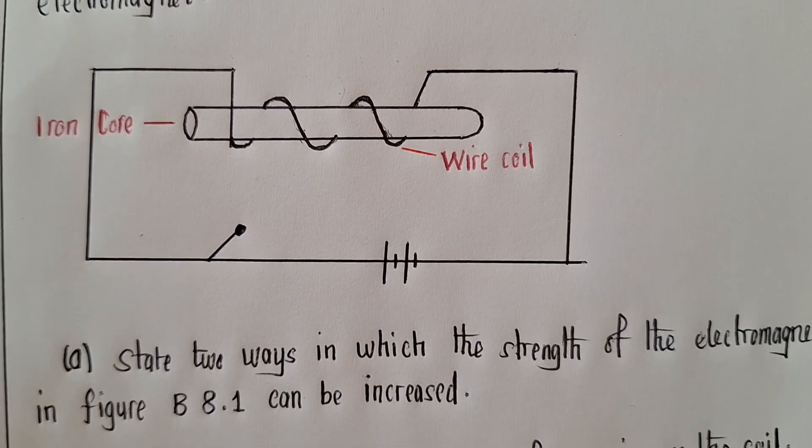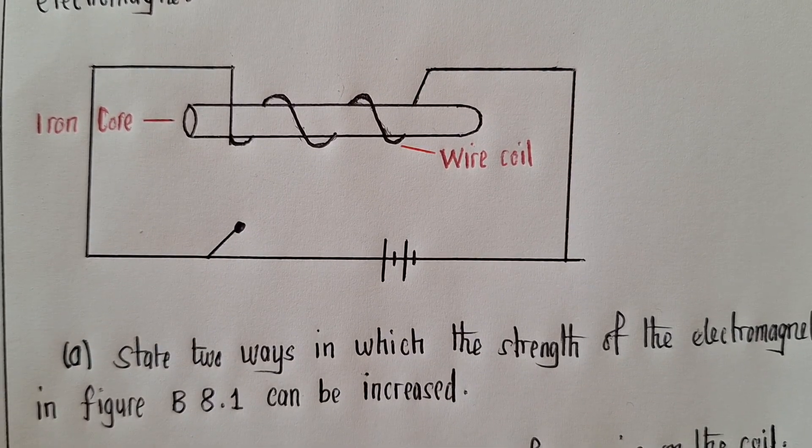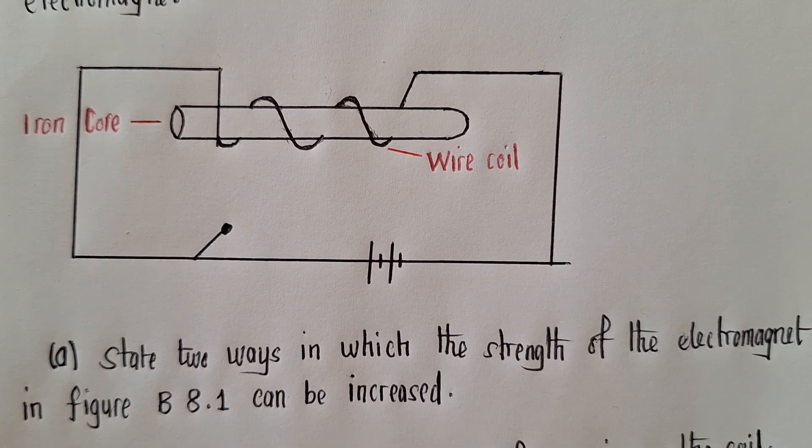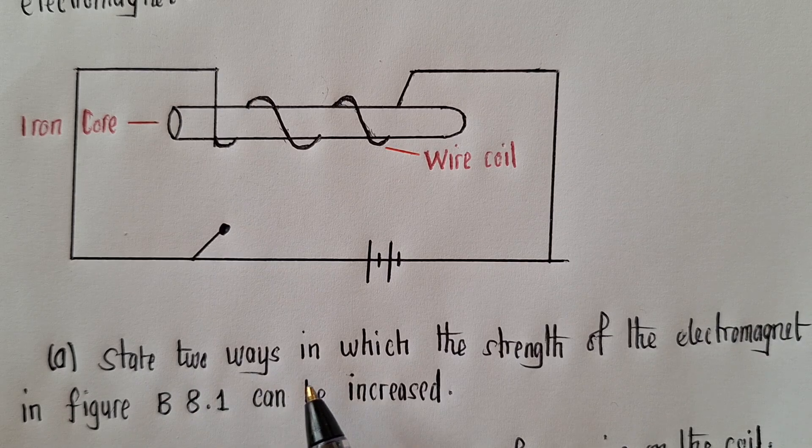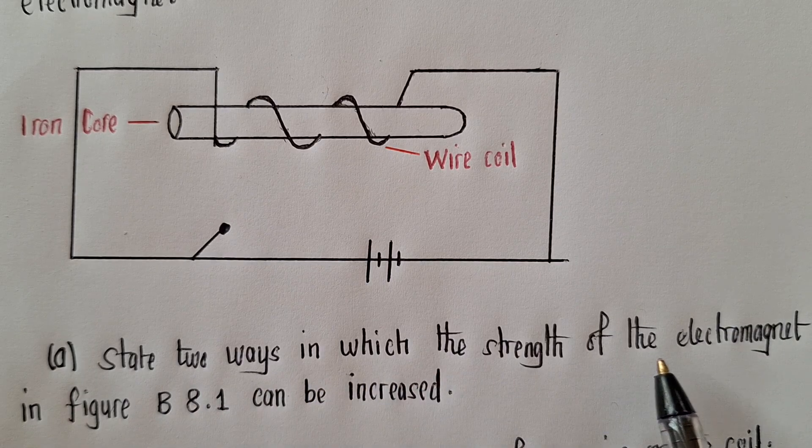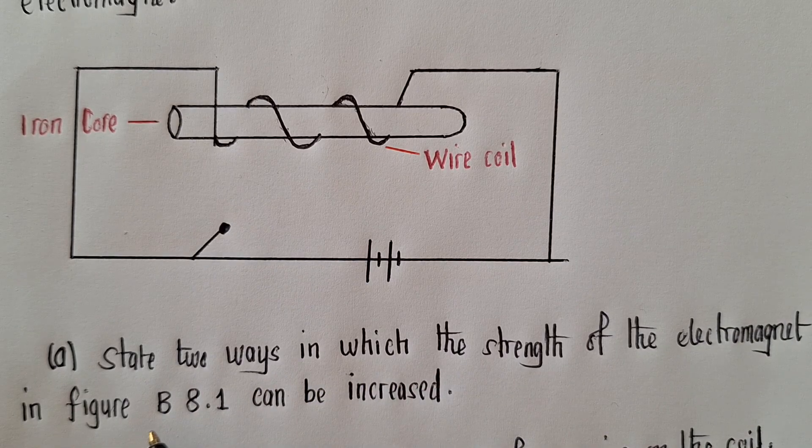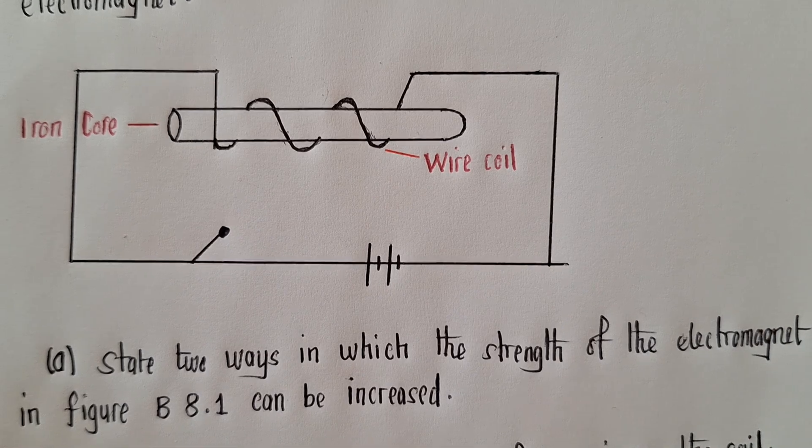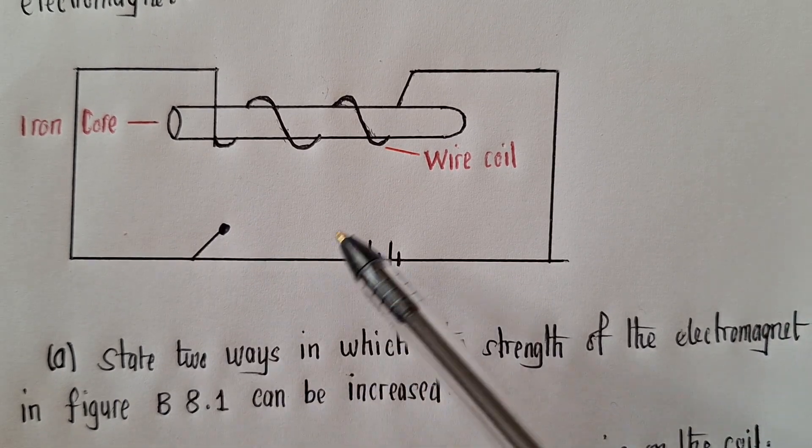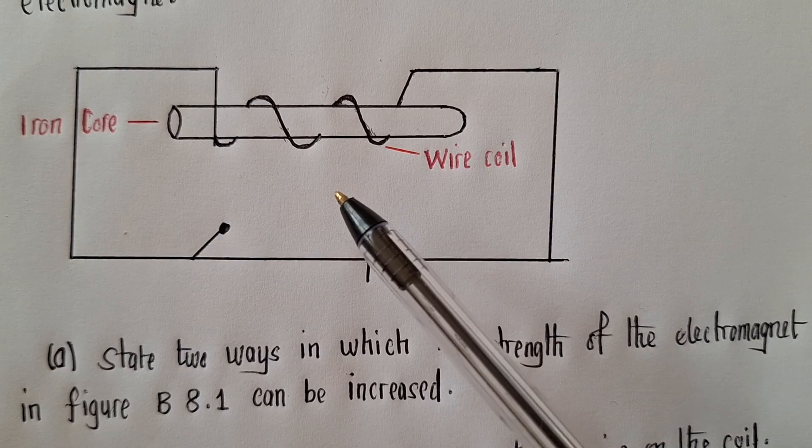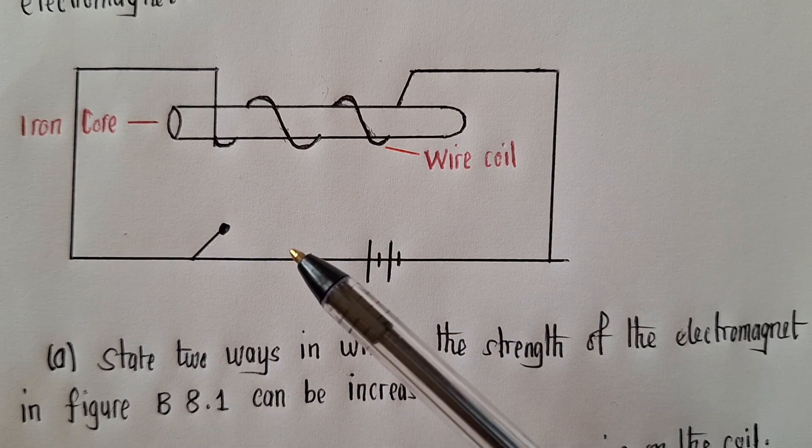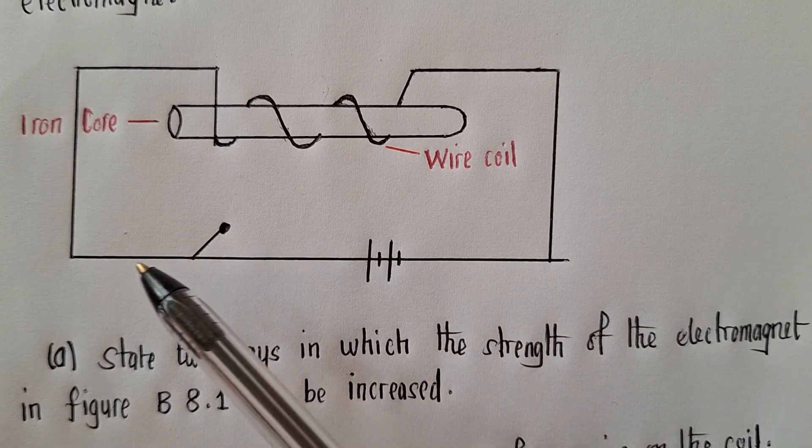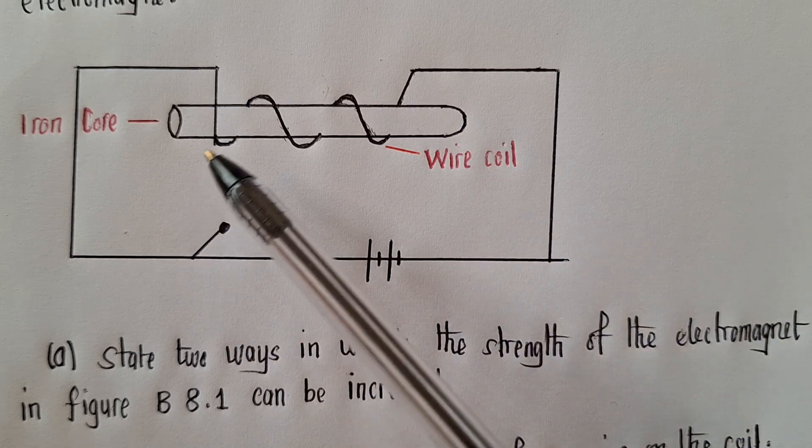And for the first question, they're saying state two ways in which the strength of the electromagnet in Figure B 8.1 can be increased. So what they're trying to ask us here is to find ways on how magnetism can be increased here.